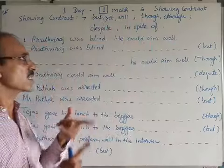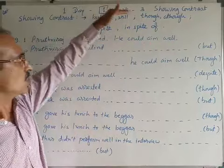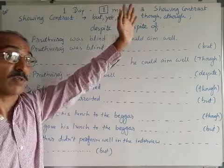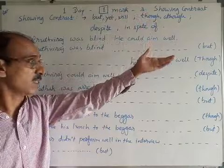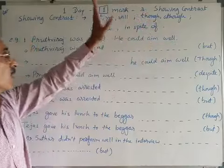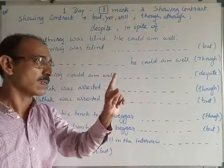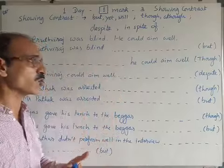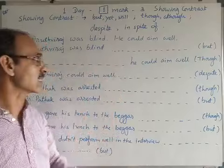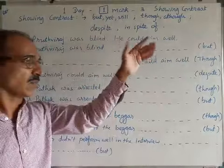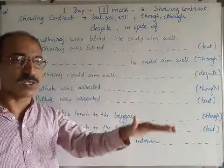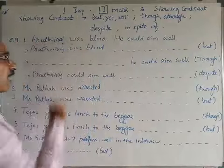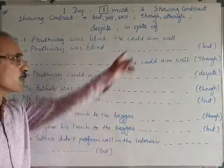You will be asked to identify the function and also to complete sentences. For example: 'Phrithviraj was blind. He could aim well.' These two sentences show contrast.